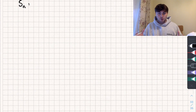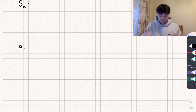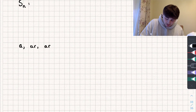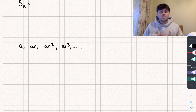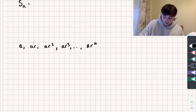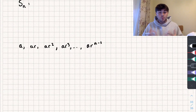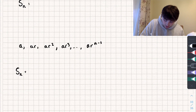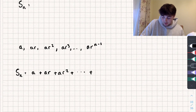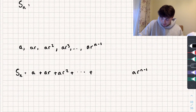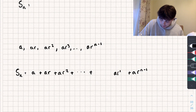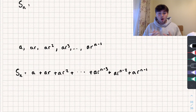Take a generic geometric progression with a first term of A and common ratio R. We start with A, multiply by R to get AR, then AR squared, AR cubed, and so on, all the way up to the nth term which is AR to the power of n minus 1. If we were to find the sum of that series up to the nth term, we could write S_n equals A plus AR plus AR squared, and so on, up to AR to the power of n minus 2, and the final term AR to the power of n minus 1.